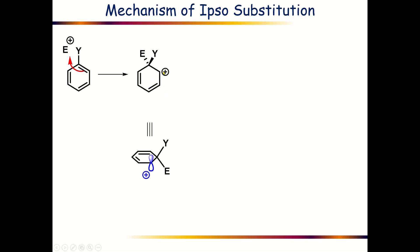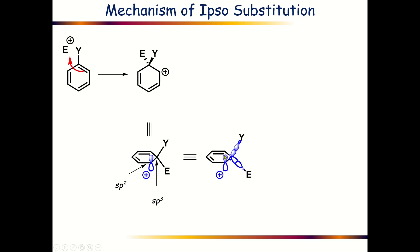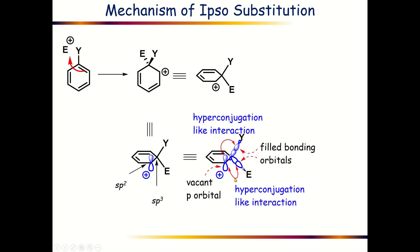If we draw the p orbital of this carbocationic center, this newly formed carbon-E bond is shown here, and thereby this previously sp2 hybridized center will now be changed into an sp3 hybridized center, while this carbocationic center will of course be sp2 hybridized. If we further draw the hybrid orbitals of this carbon-Y and carbon-E bonds, these are the two bonding molecular orbitals for the carbon-Y bond and carbon-E bond, and these two bonds are basically stabilizing this vacant p orbital of this carbocationic center via hyperconjugation-like interactions.